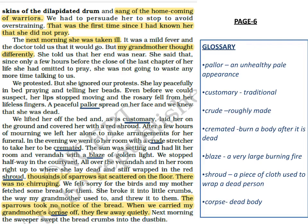The family lifted her from the bed, laid her on the ground, and wrapped her with a red-coloured cloth. Thousands of sparrows sat silently near her. The author's mother fetched some bread for the birds, but they didn't eat any. They flew away later as the family carried the dead body. The sweeper removed the crumbs the next morning. In this way, the sparrows mourned the death of their benefactor — their grandmother — through utter silence.